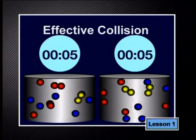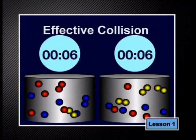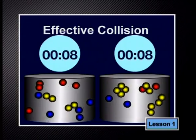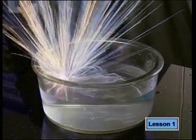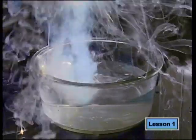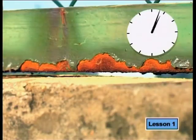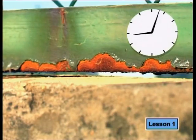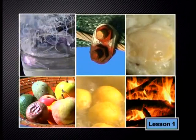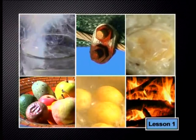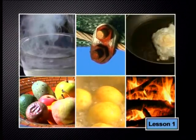We call a collision in which product molecules form an effective collision. Some reactions, like an explosion, can happen very quickly. But some reactions, like the oxidation of iron to form rust, are slow. Can you suggest why different chemical reactions take different amounts of time to form products?